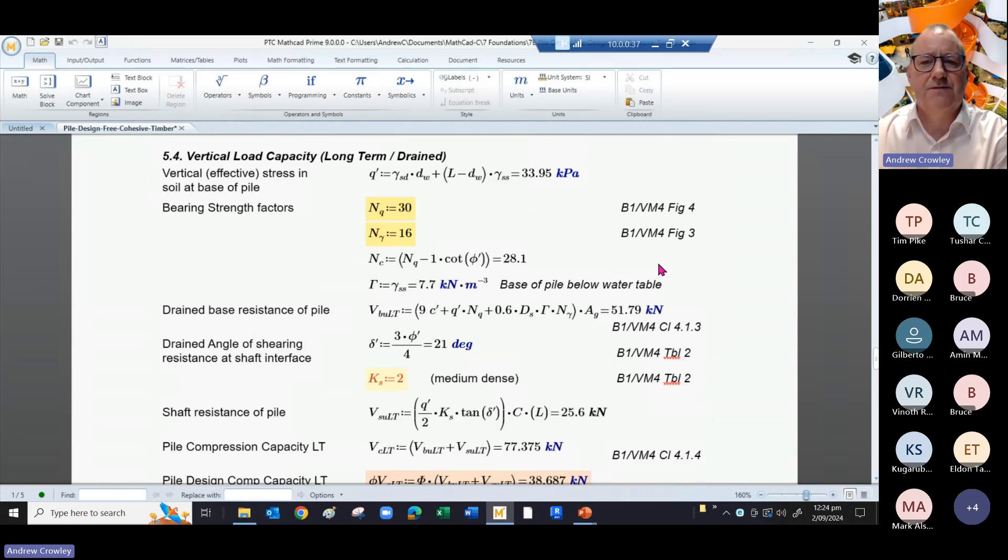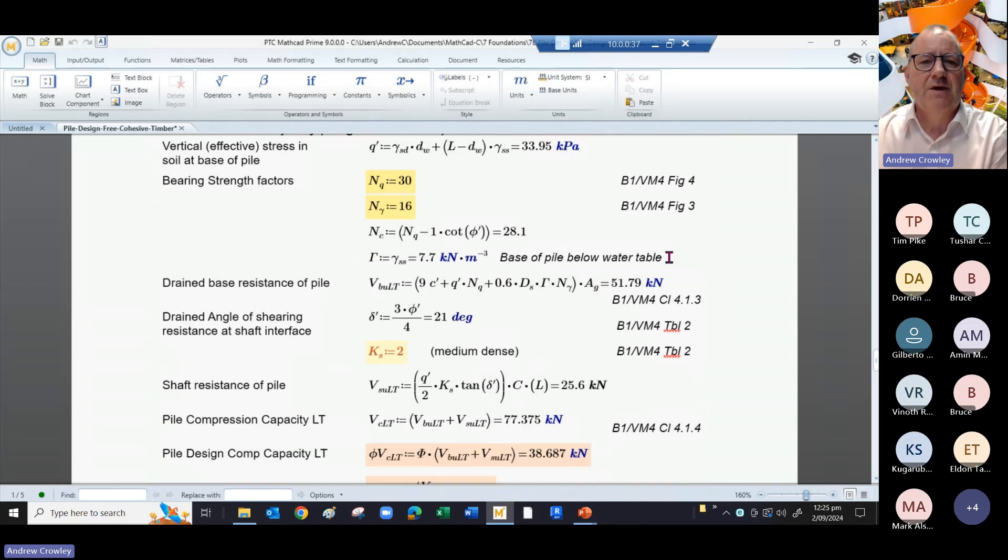Take our bearing strength factors—and again, this is straight out of Figure 4 and Figure 3 from B1/VM4—and we work out the drained base resistance of the pile, and that comes out as 50 to 51 kilonewtons.